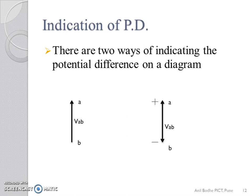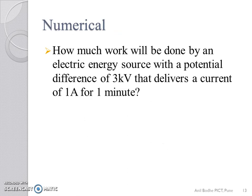Now, we take a numerical. How much work will be done by an electric energy source with a potential difference of 3 kV that delivers a current of 1 ampere for 1 minute?